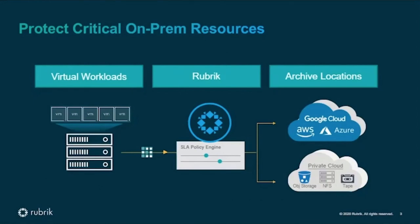This is what our on-premises protection looks like at a high level — we call this Rubrik CDM. At the center of our product is the SLA policy engine, which simplifies defining recovery point objectives for your resources. The same policy defines retention, archiving, and replication settings all in one place. You can use our pre-canned SLAs or create new policies to match your business needs. Then it's as simple as pointing Rubrik at a virtual environment and assigning an SLA. Rubrik takes over from there, backing up data and archiving it to the cloud.